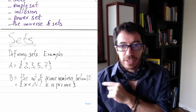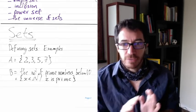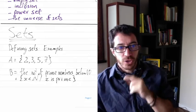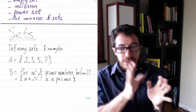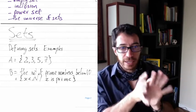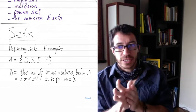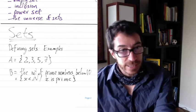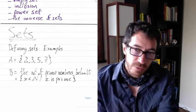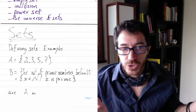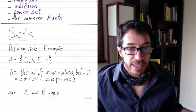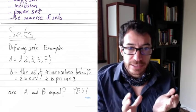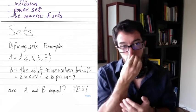More mathematically, we can write that B is the set of all x in the natural numbers such that x is prime. That bar means 'such that' - x in N, N for the natural numbers, such that x is prime. So those two lines are exactly the same, one more formally than the other. We got these two sets A and B. Are they equal? They were defined differently, but yes, they are equal.